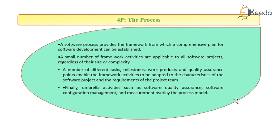The process. How the product can be developed depends upon the process. The quality of the product which has to be developed depends upon what process is being carried out. A software process provides the framework from which a comprehensive plan for software development can be established. A small number of framework activities are applicable to all software projects regardless of their size or complexity. These framework activities include tasks, milestones, work products, and quality assurance, which enable the framework activities to be adapted to the characteristics of the software project and the requirements of the project team.